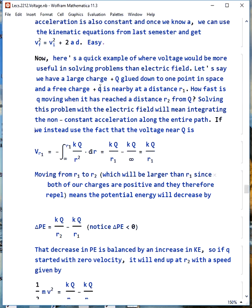Now, what about this problem instead? Let's say we have a large free charge, we call it plus Q, and it's nailed down to some point in space, and we have a free charge that's smaller, plus lowercase q, nearby at a distance R1. How fast is little q moving when it's reached a distance R2 from big Q? If we want to solve this problem with the electric field, that means we have to integrate that non-constant acceleration along the entire path.